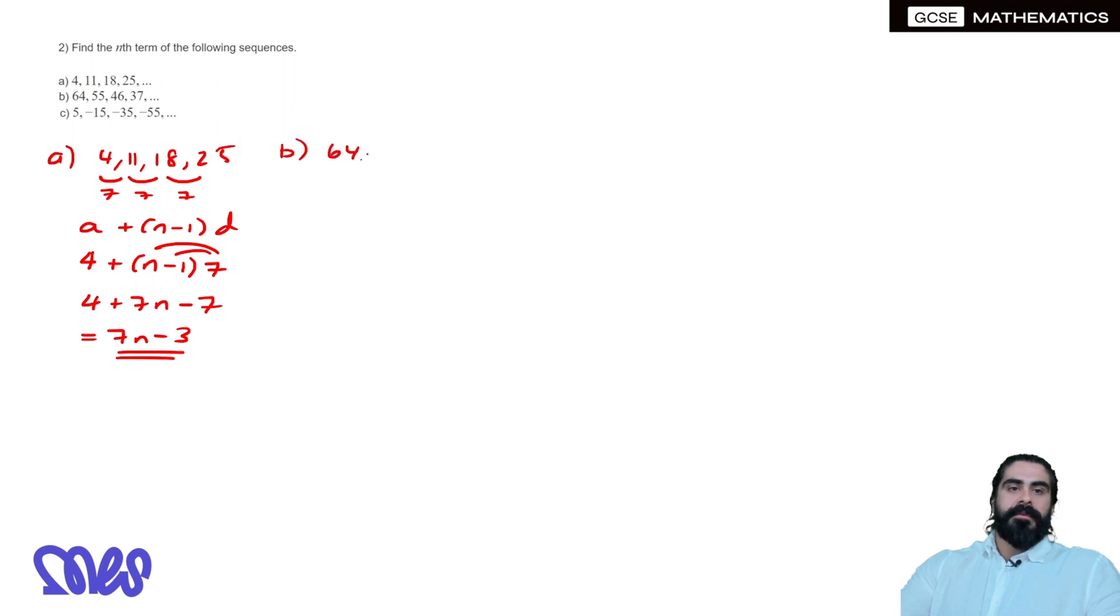Part B, we have 64, 55, 46, 37, and we can see here that we are going down by 9. Every time we're going down by 9, so we're going to say A plus N-1 D, the first term is 64 plus N-1, now for negative terms we should put in a bracket, multiplying the minus 9, so 64 N times minus 9 is minus 9N, minus 1 times minus 9 is plus 9. 64 plus 9 is, well you can add 10 then minus 1, so that'll be 74 minus 1 is 73, minus 9N.